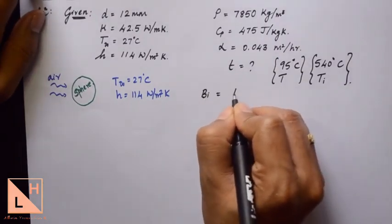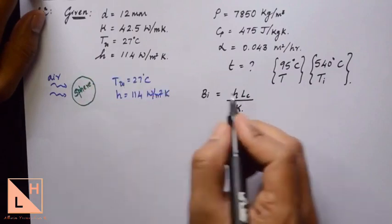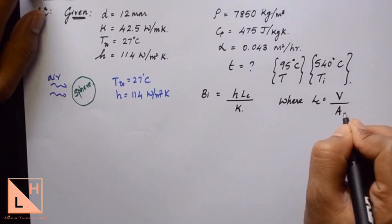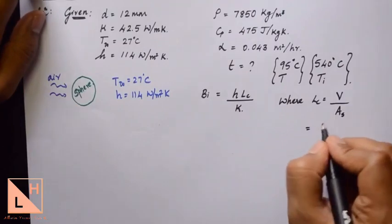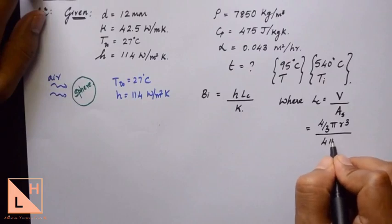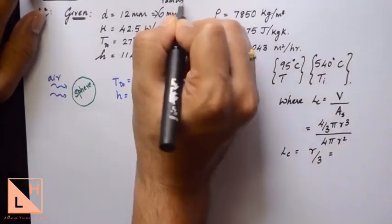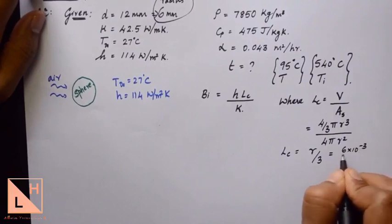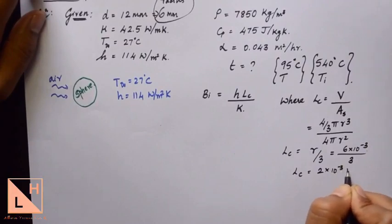The Biot number is given by h·Lc/k. We know h and k from the given data. We need to find Lc, which is the ratio of volume to surface area. For a sphere, volume is (4/3)πr³ and surface area is 4πr². So Lc equals r divided by 3. The radius is 6 millimeters, giving Lc equal to 2×10⁻³ meters.